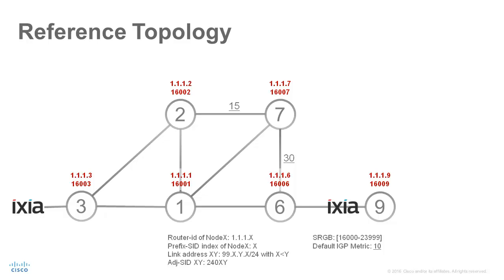The link metric of all links is 10, except for two links: the link between node 6 and node 7, which has a metric of 30, and the link between node 2 and node 7, which has a metric of 15.